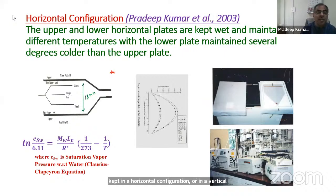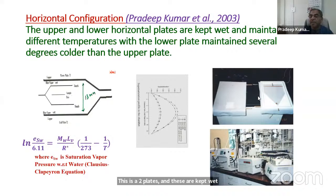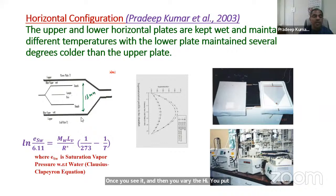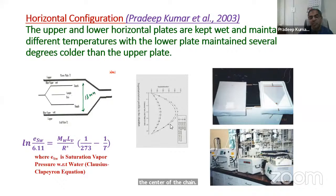I will describe the horizontal configuration — an instrument I made myself at the University of Toronto. There are two plates: the upper plate and the lower plate. The lower plate is kept at a colder temperature compared to the upper plate. These plates are kept wet with filter paper. Once sealed, you put the bottom plate at a different — colder — temperature than the top, and the supersaturation profile inside the chamber, from top plate to bottom plate, shows a maximum supersaturation at the center of the chamber.